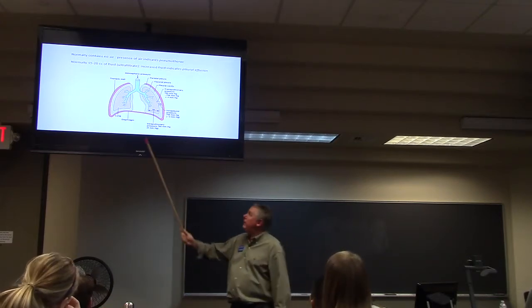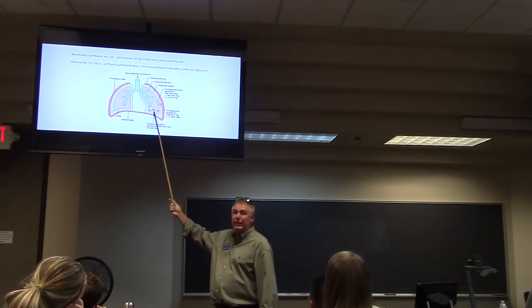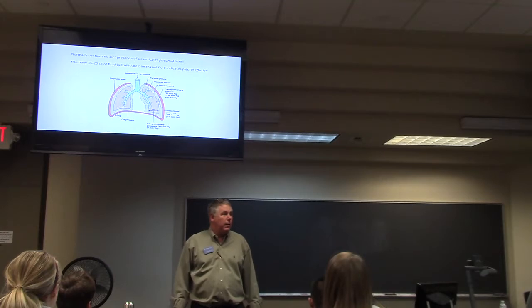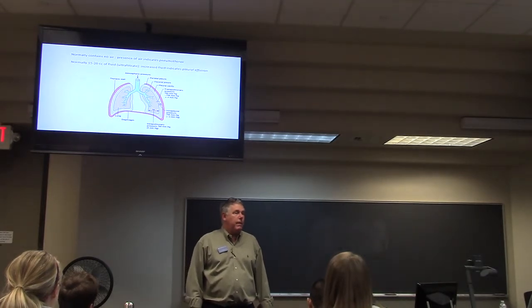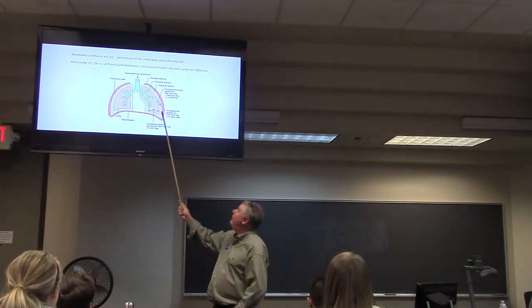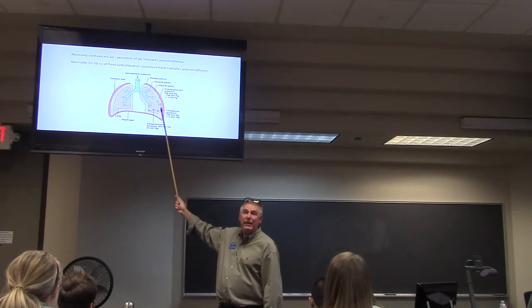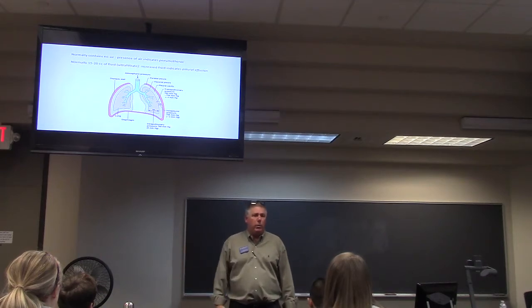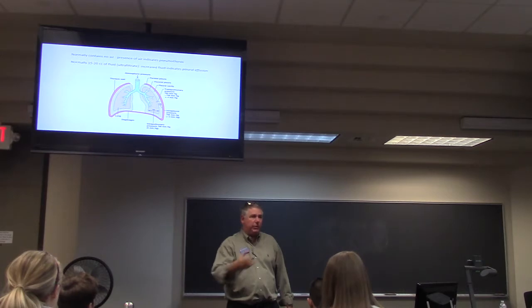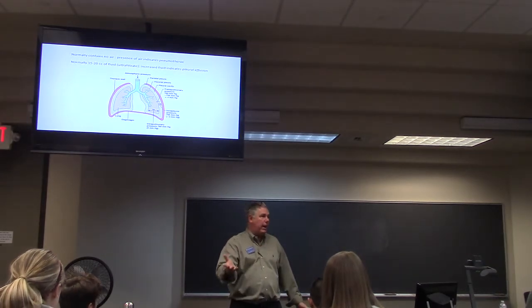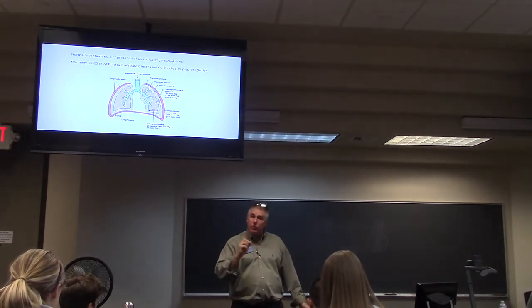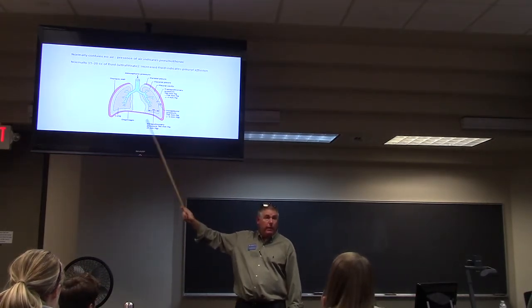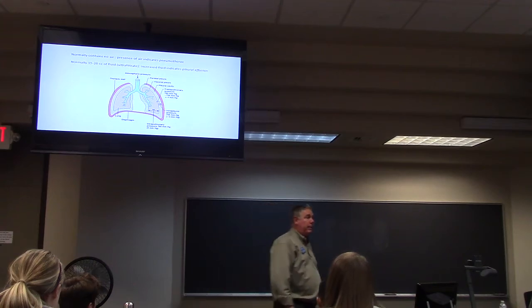But if you look down here, it says that the pressure inside the lung is 760. Well, of course it is, because that's what is connected to outside through the trachea. Now, if you look at the pleural cavity, you're dealing with 756. So that only leaves a negative pressure of four millimeters of mercury, which is not very—if you try to inflate a blood pressure cuff to four millimeters, you see how ridiculously small it is, which means that the lung has to be one hell of a compliant organ to respond to only four millimeters of mercury.